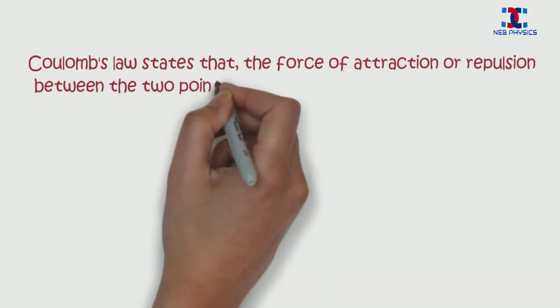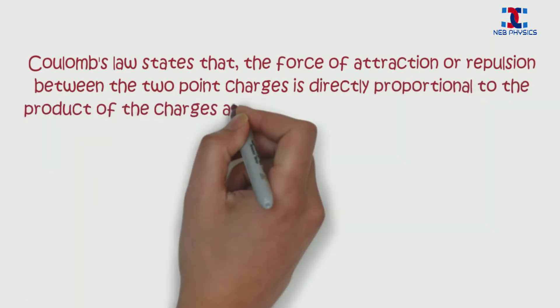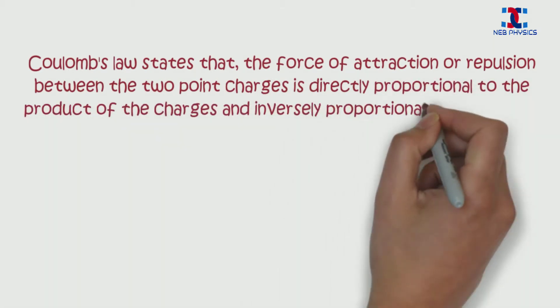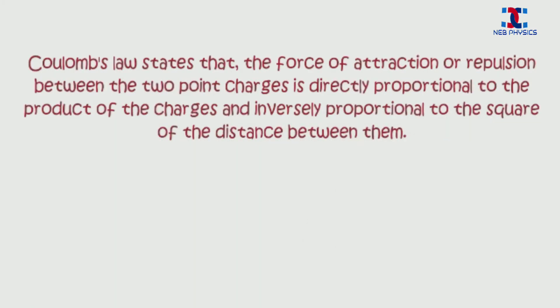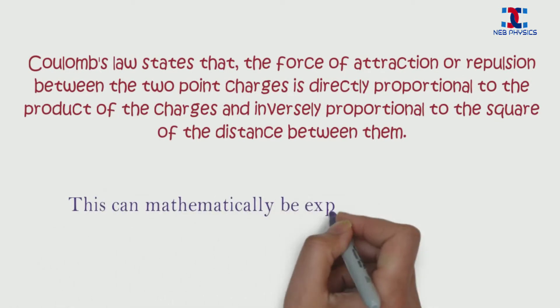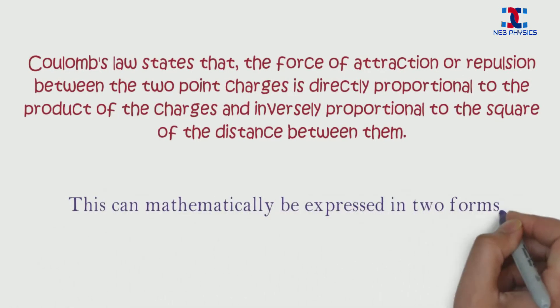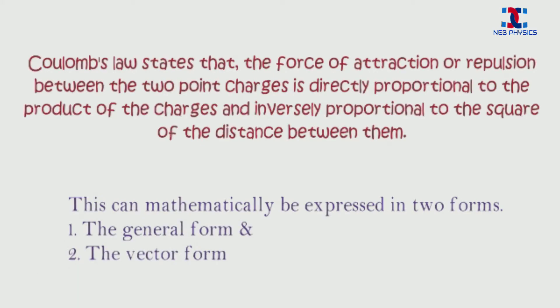Coulomb's Law states that the force of attraction or repulsion between two point charges is directly proportional to the product of the charges and inversely proportional to the square of the distance between them. This can mathematically be expressed in two forms: the general form and the vector form, which we are going to study now.